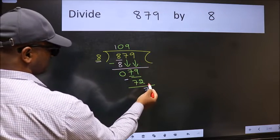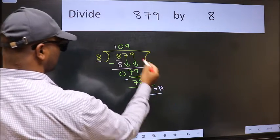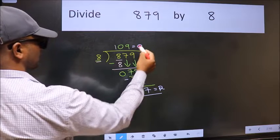No more numbers to bring it down, so we stop here. This is our remainder and this is our quotient.